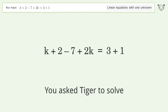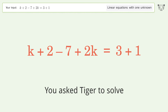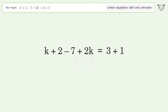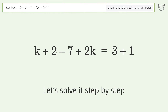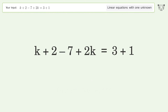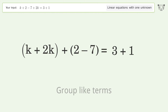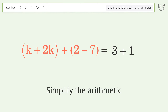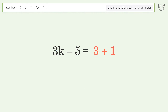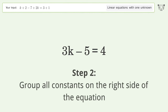Tiger is asked to solve a linear equation with one unknown. The final result is k equals three. Let's solve it step by step: simplify the expression, group like terms, simplify the arithmetic, and group all constants on the right side of the equation.